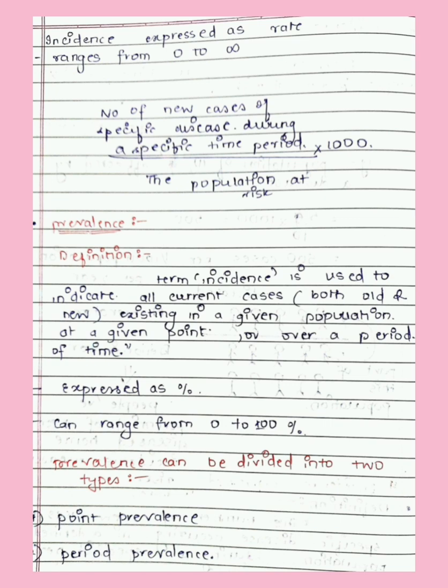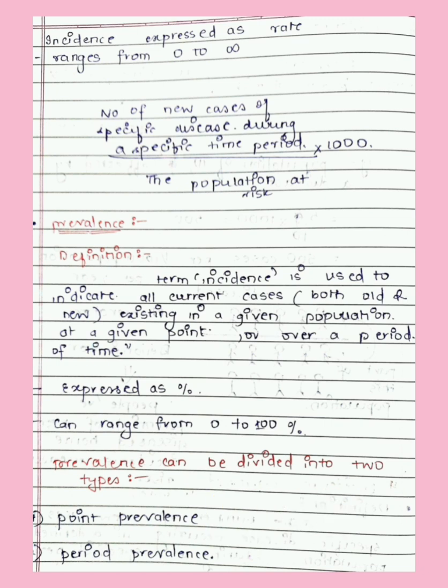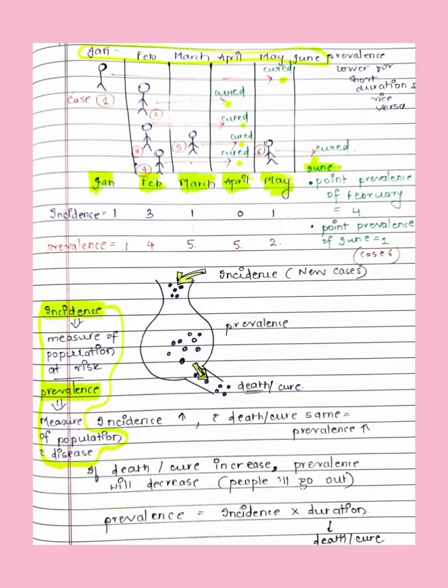Prevalence is divided into two types: point prevalence and period prevalence. Point prevalence is at a particular point in time — for example, if there is an epidemic outbreak from January till December, the cases counted in the month of January would be the point prevalence. Period prevalence, on the other hand, covers all cases from January through December.